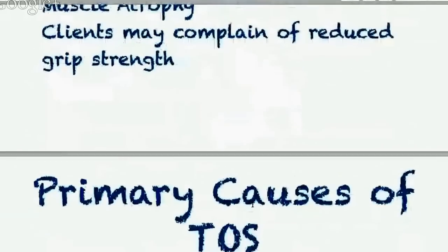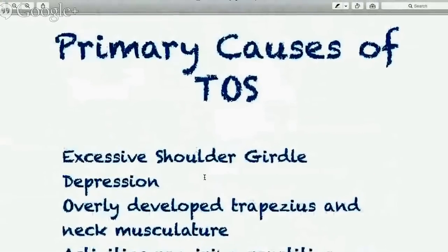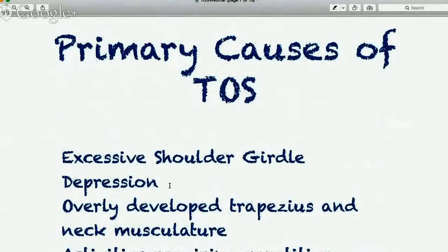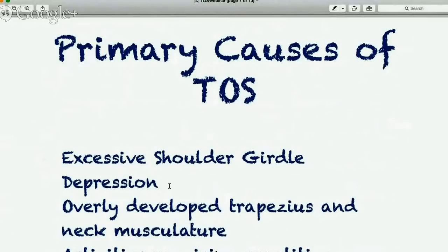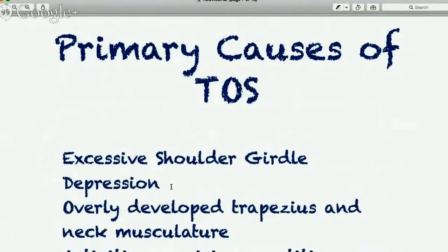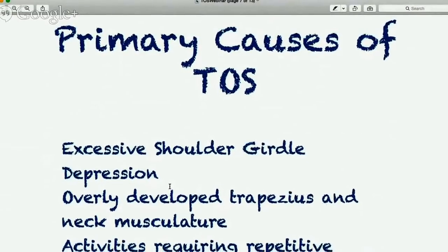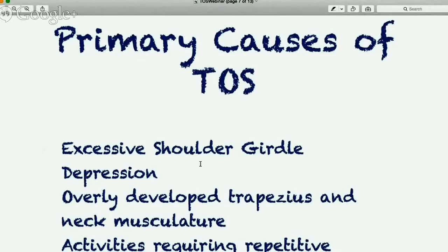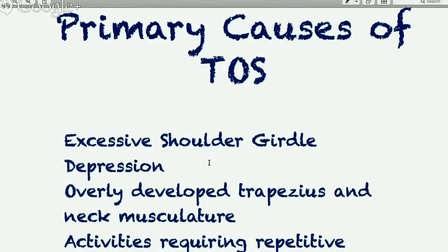What are the primary causes of thoracic outlet syndrome? One main cause is excessive shoulder girdle depression — when there is a heavy load on the shoulder pulling it down, causing those muscles to be overstretched. This shortens the gap between the belly of the muscles, trapping the brachial plexus between them — like trapping something between two pieces of rubber: as you pull the rubber tighter, it grips tighter on whatever is in between. This includes repetitively carrying heavy bags on one shoulder.